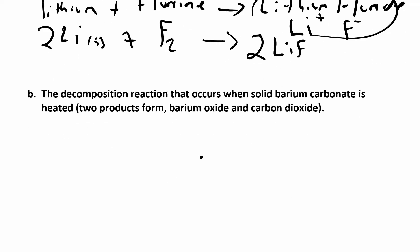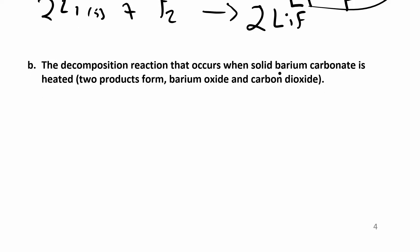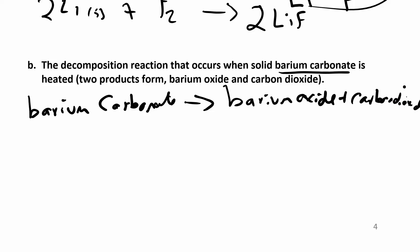Now this one's a decomposition that occurs. That means I'm starting with barium carbonate - that's an ionic compound too. So I have to take that name and write the formula. I'm making two products: barium oxide and carbon dioxide. You probably know carbon dioxide right off the top of your head, the other ones you might have to think about.